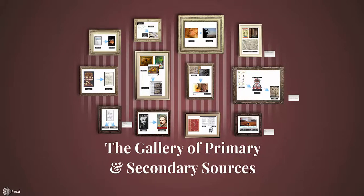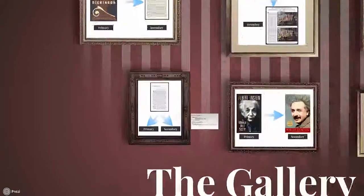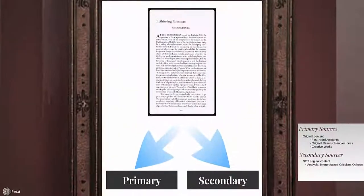There may be times when you are specifically required to find a primary or secondary source as part of your research. It's important to realize that primary and secondary sources can't be easily broken down by format. For instance, a journal article could be either a primary or a secondary source.